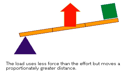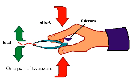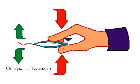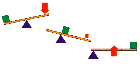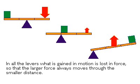The load experiences less force than the effort, but moves a proportionately greater distance, as with a fishing rod pulling a fish, or a pair of tweezers grasping an object. For all these levers, what is gained in motion is lost in force. The larger force always moves through the smaller distance.